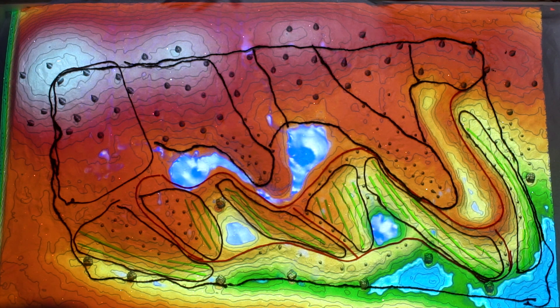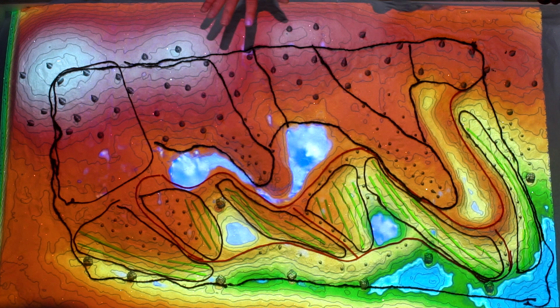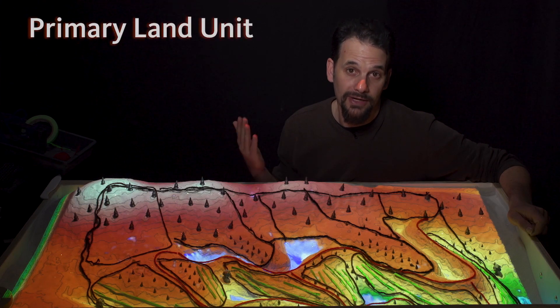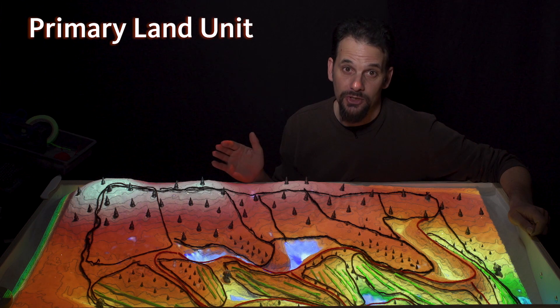A similar solar orientation, which means that they would have similar management. So what I've created here with this matrix are what we call primary land units, and each primary land unit is a management unit.